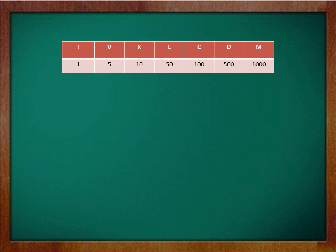So here we have seven symbols: I, V, X, L, C, D, M. Once again let's take a look at these symbols. I stands for 1, V stands for 5, X is 10, L is 50, C is 100, D is 500, and M is 1000.